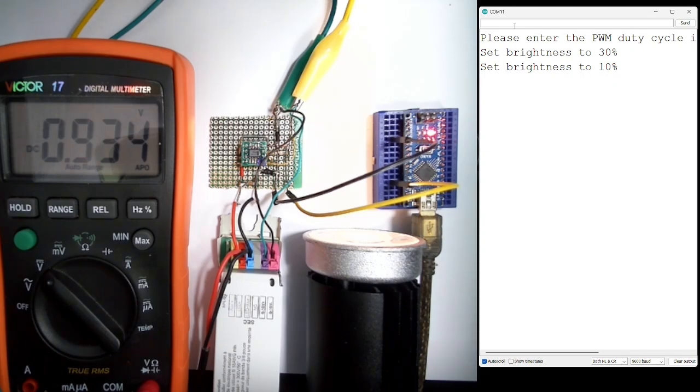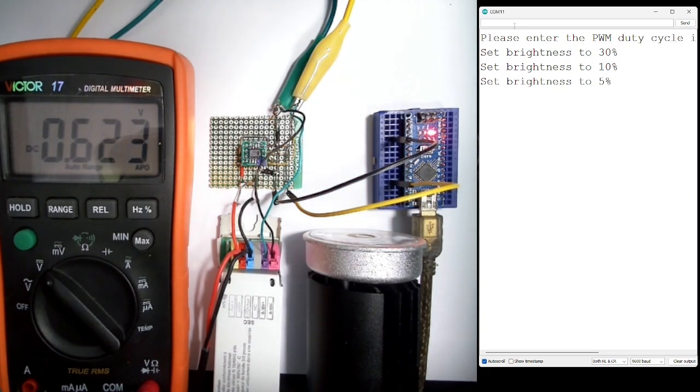The light dimmed down to the minimum level. Now if I further reduce the PWM signal to 5%, the light will go to standby.